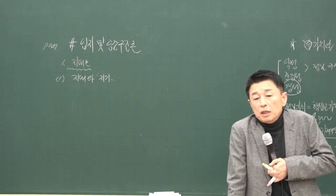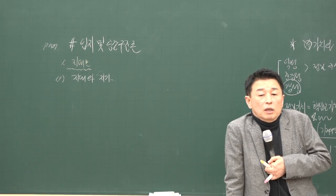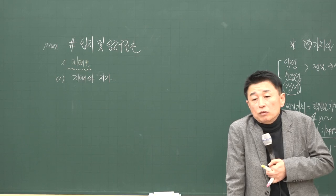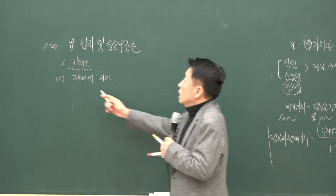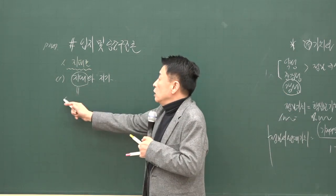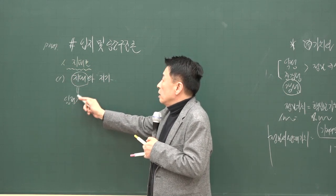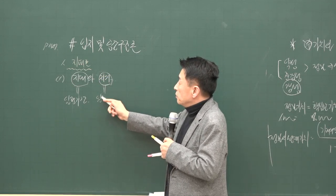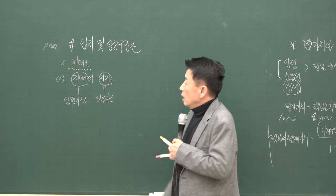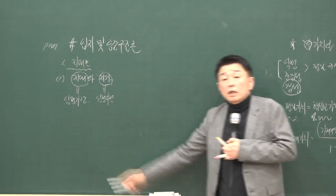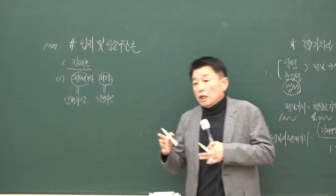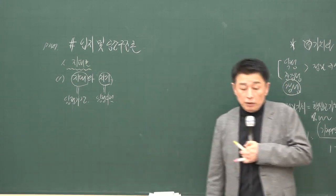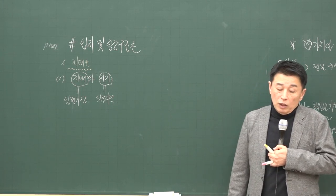지대는 유량 개념으로 매 기간마다 측정하는 것이고, 지가는 저량 개념으로 시점을 기준으로 측정합니다. 왜냐하면 매 순간 토지의 가치는 달라질 수 있기 때문이에요. 지대와 지가가 발생하는 원리는 부동산의 특성인 부증성에 기인합니다. 부증성에 의해 생산비 법칙이 성립하지 않아요.